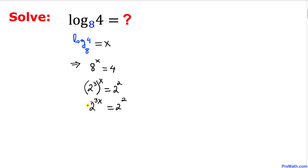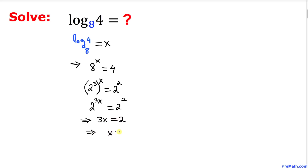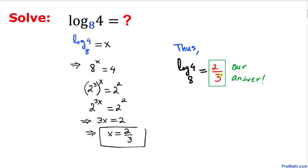Applying the power rule, this becomes 2 power 3x equal to 2 power 2. Since the bases on both sides are the same, we can equate the exponents. So 3x equals 2, which means x equals 2 over 3. Thus our value turns out to be 2 thirds.